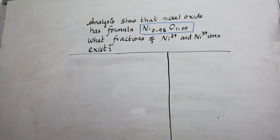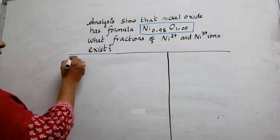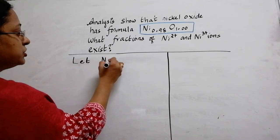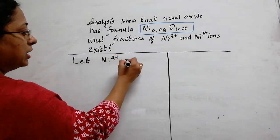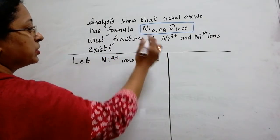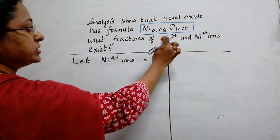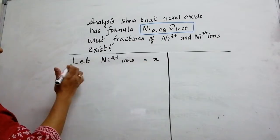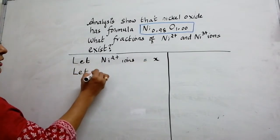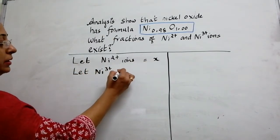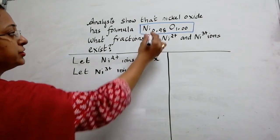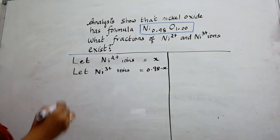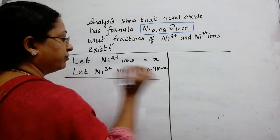Now let us move on to solve this problem. Let us consider nickel 2+ ions as equal to X because nickel is made up of 2 ions, nickel 2+ and nickel 3+. So nickel 2+ ions, let us keep it as X. Let nickel 3+ ions be 0.98 minus X.